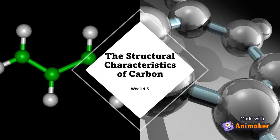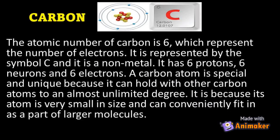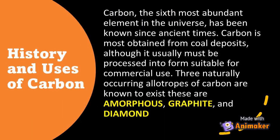Our topic for today is all about the structural characteristics of carbon. The atomic number of carbon is six, which represents the number of electrons. It is represented by the symbol C and it is a non-metal. It has six protons, six neutrons, and six electrons. A carbon atom is special and unique because it can bond with other carbon atoms to an almost unlimited degree, because its atom is very small in size and can conveniently fit as part of larger molecules.